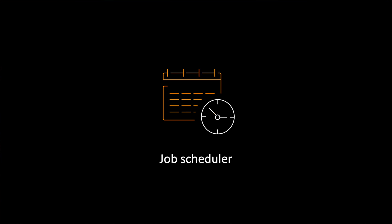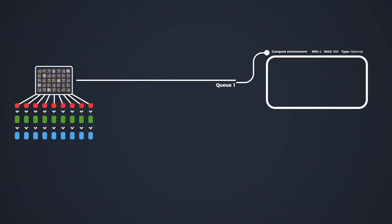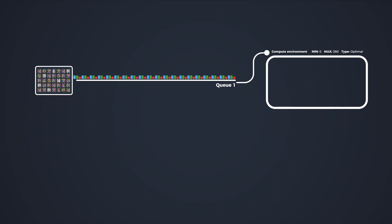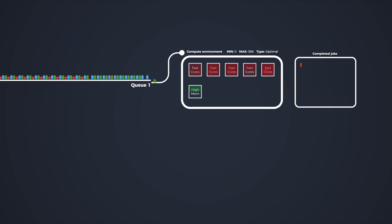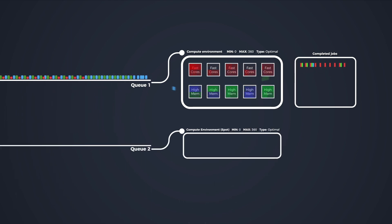AWS Batch has two major functions. First, it's a job scheduler. It acts as the main interface for scheduling your workloads. Batch takes your job requests, places them onto a job queue, and manages the lifecycle of those requests from a pending state, to starting, to running, and finally to finishing. Should your job fail for any reason, you can tell Batch to automatically retry the job — handy in the case of unexpected hardware failure, or when using spot instances and an instance gets reclaimed. You can tell Batch to selectively restart jobs from a spot failure, but not any other conditions.